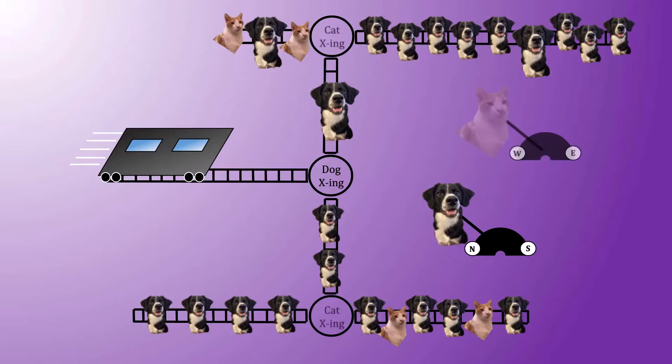Similarly, a cat controls the west-east switch station, again meaning that the cat can determine which of those two directions the trolley will ultimately go.